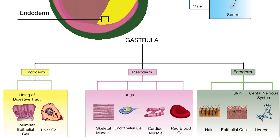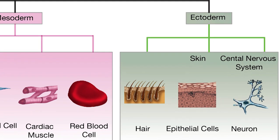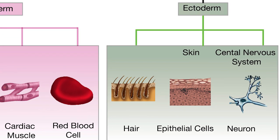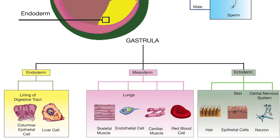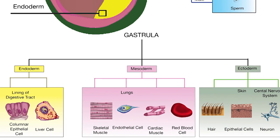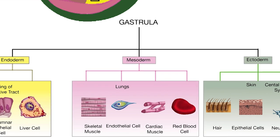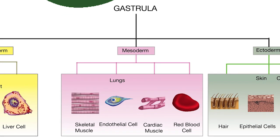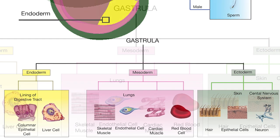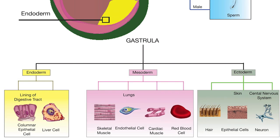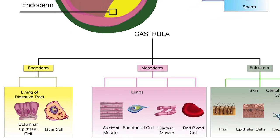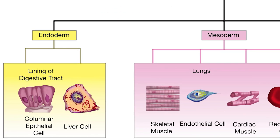The ectoderm is the outer layer and gives rise to the epidermis, the neural crest, and associated neural tissues that will later form the nervous system. The mesoderm is found between the ectoderm and endoderm and gives rise to muscle, cartilage, notochord, bone, and blood. The innermost endoderm gives rise to the epithelium of the digestive system, respiratory system, and oviducts.